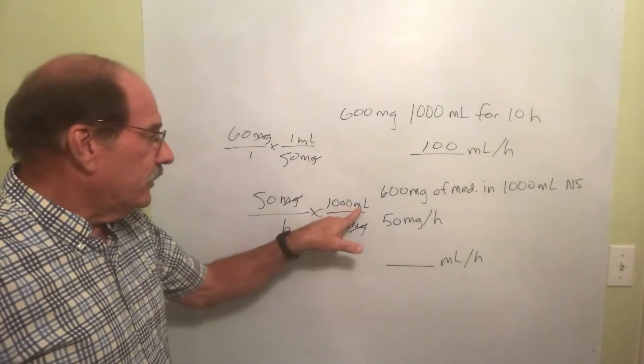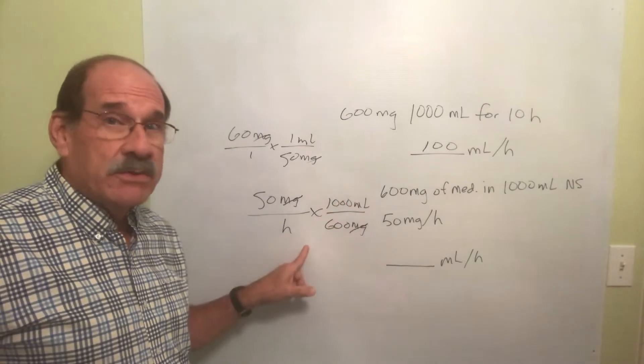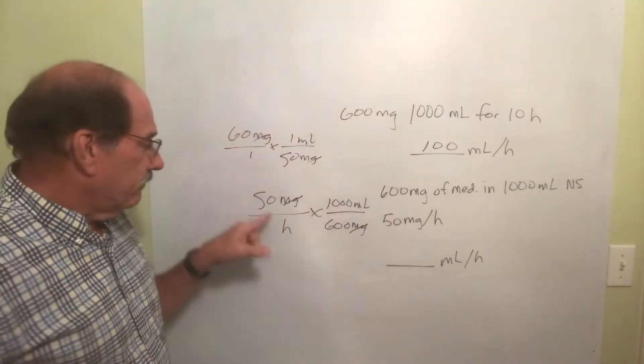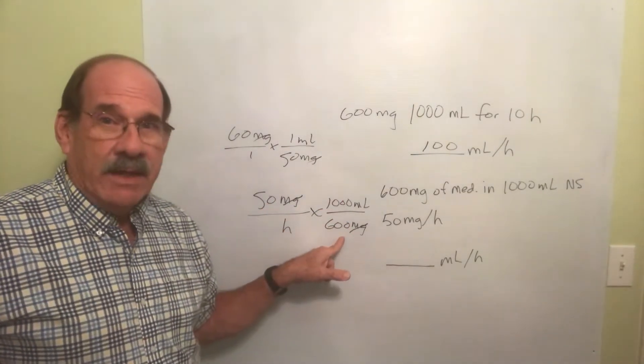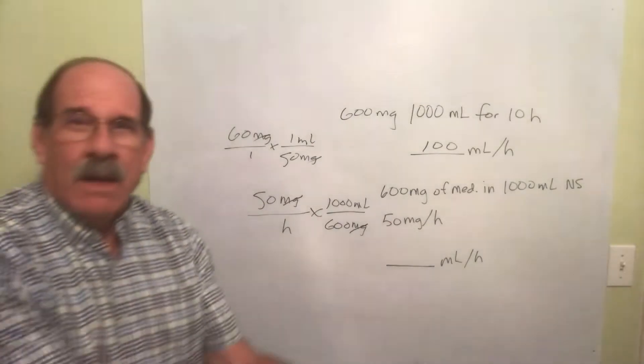By the way, what's going to be left? Milliliters per hour. Milliliters on the top, hours on the bottom. All I do now, because I have three numbers, I take this times this and divide by that.